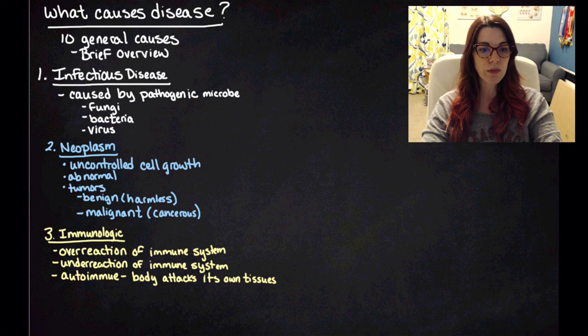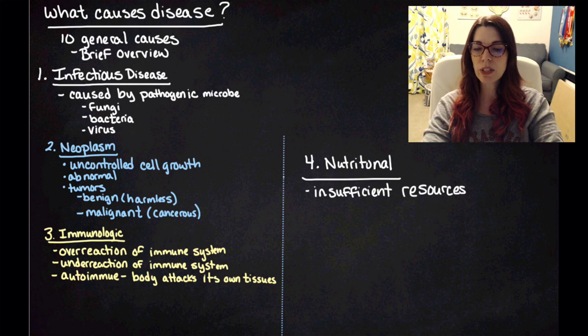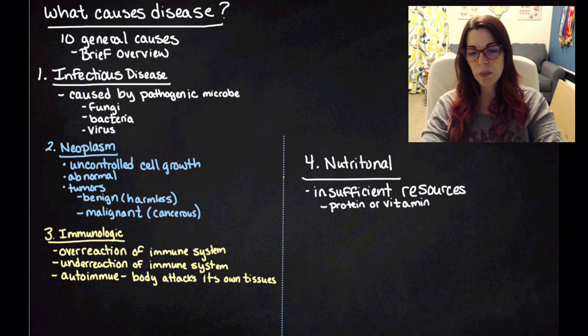So those are our first three categories. We're going to draw a line so I can squeeze some more in on this slide. And we're going to start with cause number four, which is a nutritional disease. Nutritional disease are caused by insufficient resources, typically protein or vitamins. So scurvy would be an example of a nutritional disease.